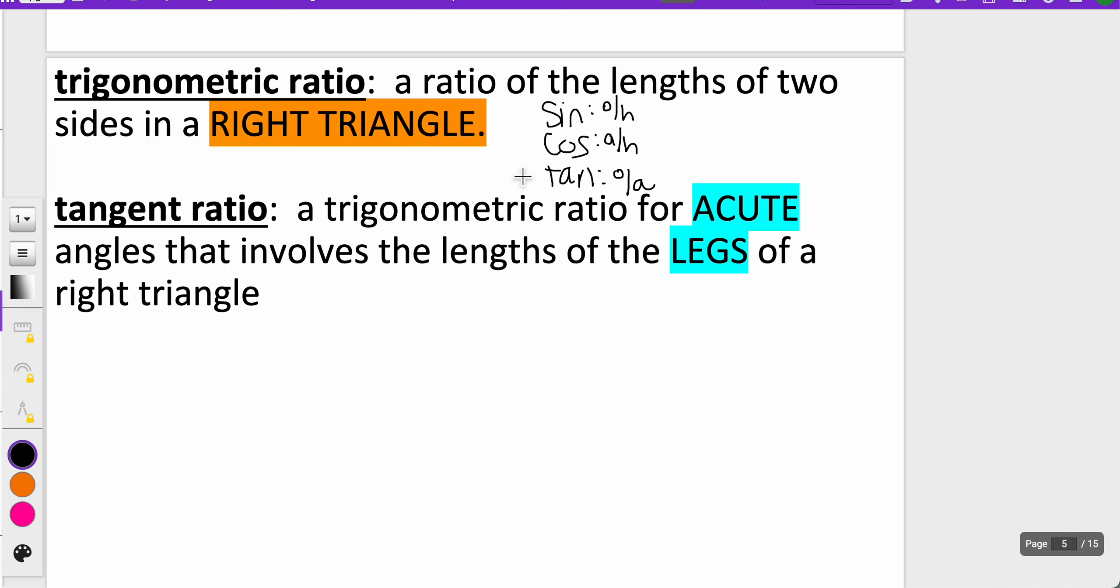The tangent ratio is our only focus today, and that's a trigonometric ratio for acute angles that involves the lengths of the legs of a right triangle. When we talk about tangent being opposite and adjacent, we're not involving the hypotenuse at all. The hypotenuse will only be involved with the sine and the cosine.